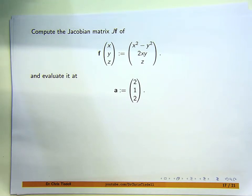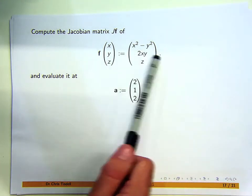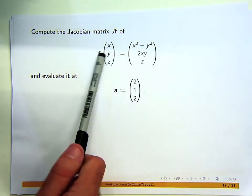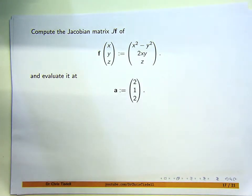So we're going to first compute the Jacobian matrix from this f, and then we'll plug in 2, 1, 2 for x, y, and z respectively.